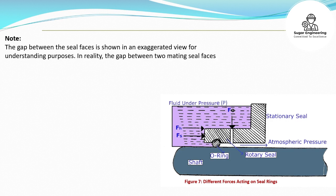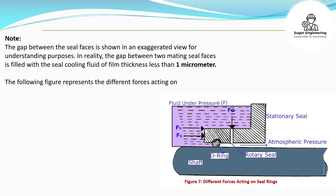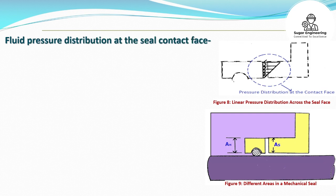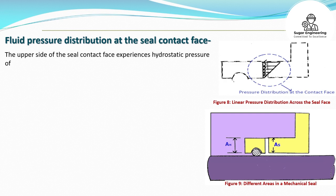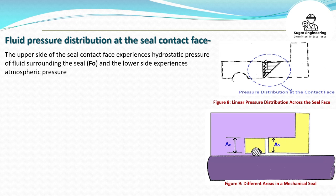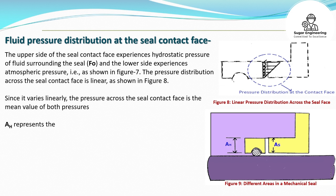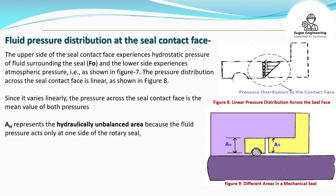In reality, the gap between two mating seal faces is filled with a seal cooling fluid of film thickness less than 1 micrometer. The following figure represents the different forces acting on the seal rings for effective sealing, where FO represents the seal opening force, FH represents the hydrostatic force, Fs represents the spring force, and P represents the fluid pressure. The upper side of the seal contact face experiences hydrostatic pressure of the fluid surrounding the seal (FO), and the lower side experiences atmospheric pressure, as shown in Figure 7. The pressure distribution across the seal contact face is linear, as shown in Figure 8. Since it varies linearly, the pressure across the seal contact face is the mean value of both pressures. AH represents the hydraulically unbalanced area, because the fluid pressure acts only at one side of the rotary seal. As represents the seal face contact area.